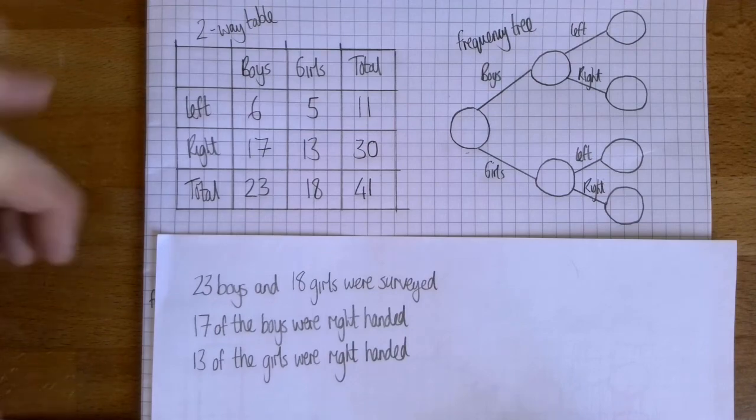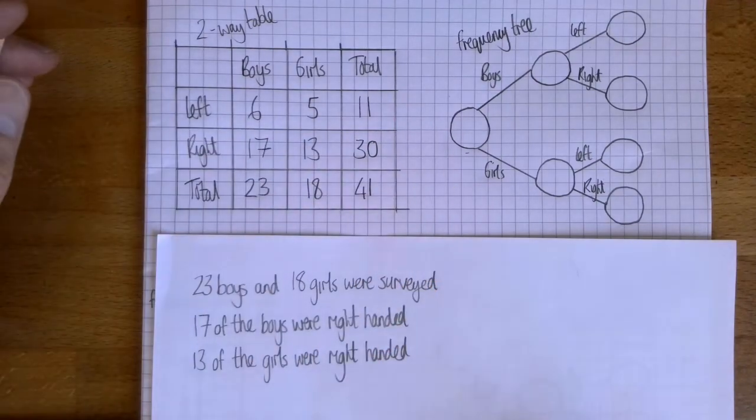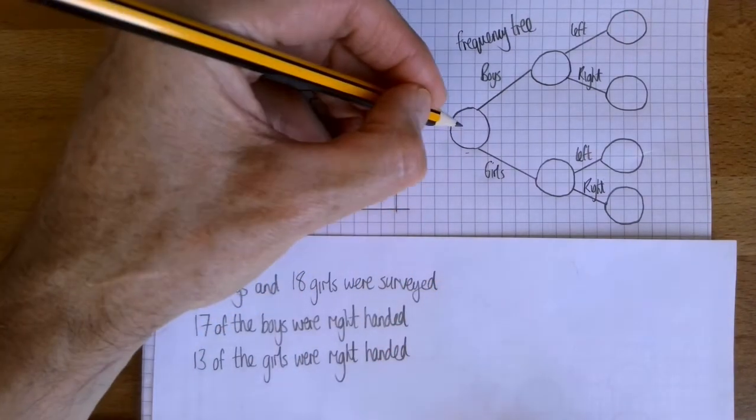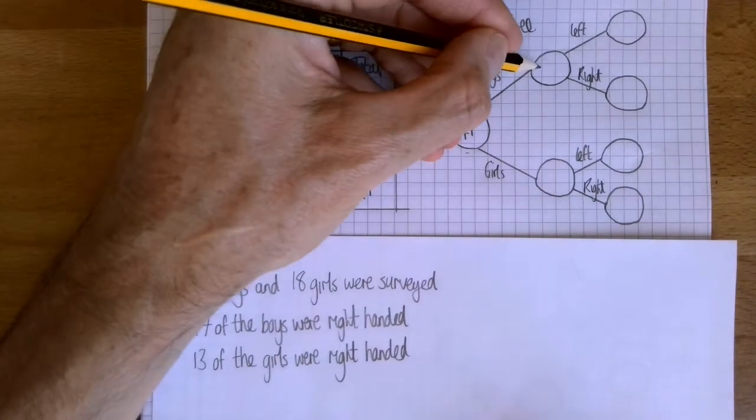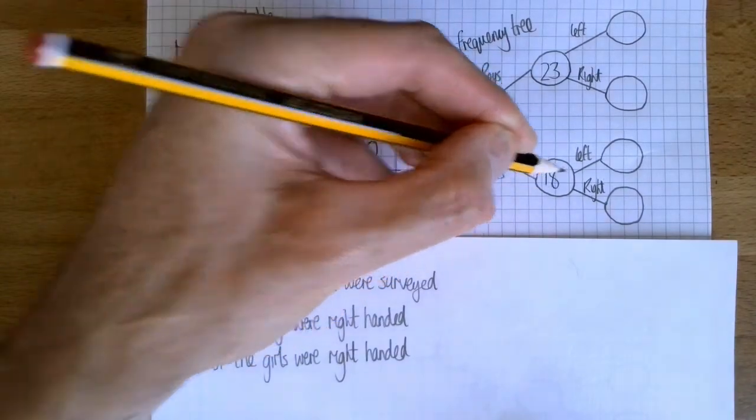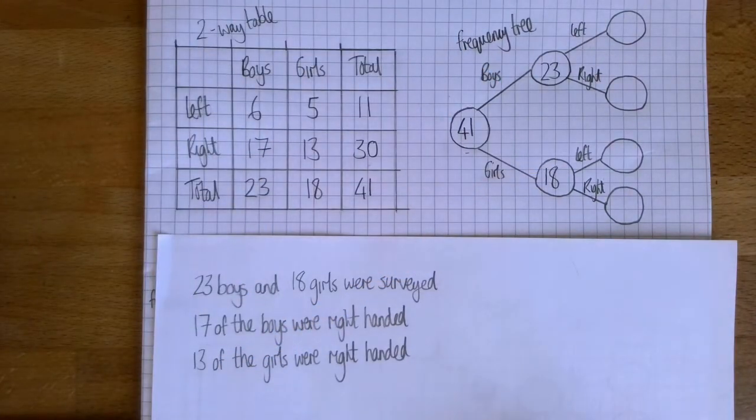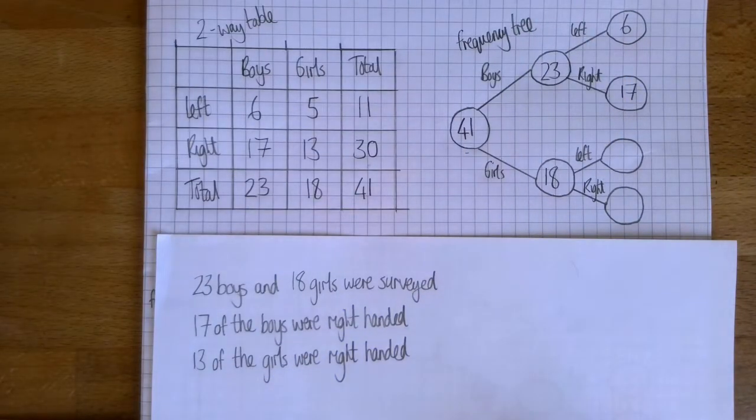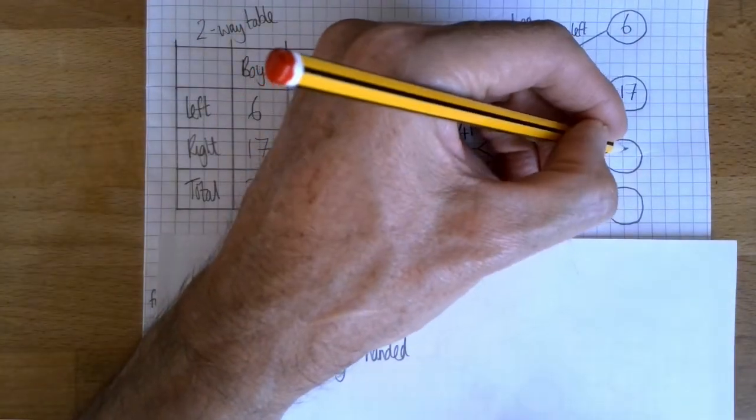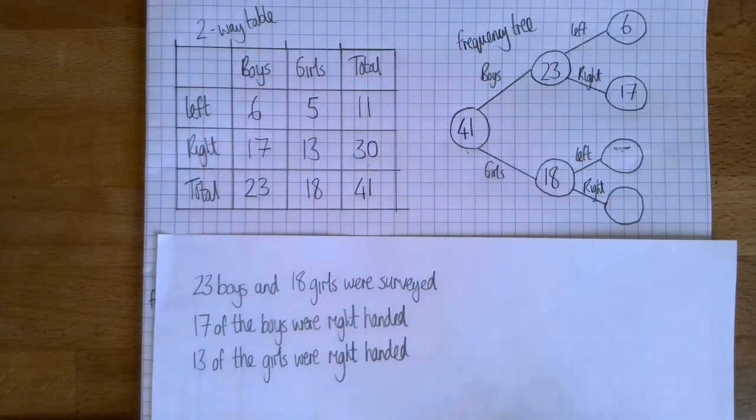I hope you can see how we're going to fill the frequency tree in from these numbers. I've got 41 people altogether, 23 of those are boys and 18 of those are girls. Of the boys, six of them were left-handed, 17 were right-handed. And of the girls, five were left-handed and 13 were right-handed.